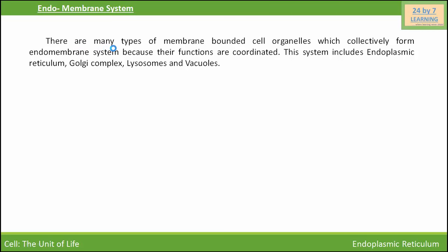So, what is endomembrane system? There are many types of membrane-bounded cell organelles which collectively form the endomembrane system because their functions are coordinated. This system includes endoplasmic reticulum, Golgi complex, lysosomes, and vacuoles.